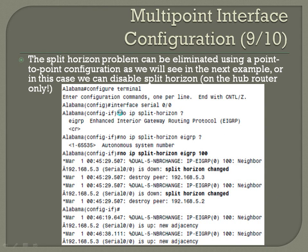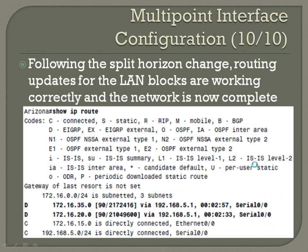They're using EIGRP as the routing protocol — that's the instance number. You'll then see the split horizon changed message. After that, you'll be able to see on the individual spoke routers that you can finally see the LAN blocks that were remote that you wouldn't have been able to see prior to that. The last step — not fully illustrated here — would be to make sure you can ping those LAN blocks from each of the spoke routers to guarantee full functionality.